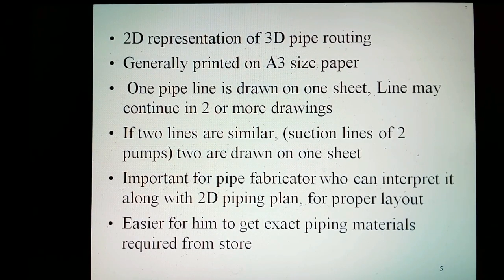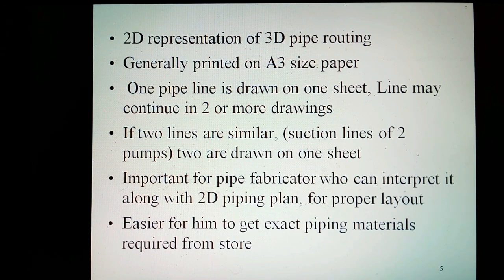Piping isometrics is the representation of a 3D pipe routing. It is generally printed on A3 size paper. One pipeline is drawn on one sheet, though the line may continue into more drawings. If two lines are similar, such as suction lines of two pumps, they are drawn on one sheet. Isometric drawing is important for a pipe fabricator — he can interpret it along with the piping plan for proper layout, and it is easier for him to get exact piping materials required from the storehouse.